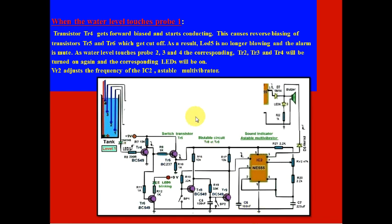When the water level touches probe 1, when we tend to fill the underground tank, transistor TR4 gets forward biased and starts conducting. This causes the reverse biasing of transistors TR5 and TR6, which get cut off. As a result, LED5 is no longer glowing and the alarm is mute.